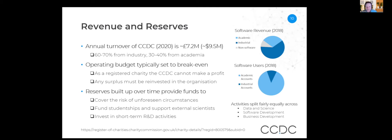When you look at users of the system, the ratio is inverted — we have far more academic accounts than industrial accounts. Looking at the differential in pricing for industry versus academia, it's about a 90 percent discount for academia. An advantage of this model is that we've been able to build reserves over time to cover unforeseen circumstances and support other research activities. With an operating budget we typically aim to break even. As a registered charity we can't make a profit, and any surplus gets reinvested in the organization.